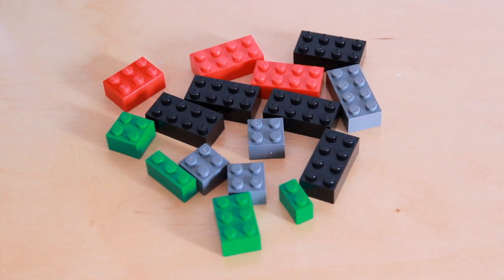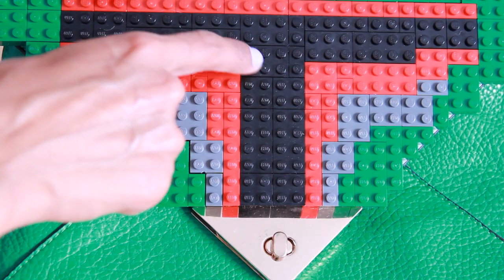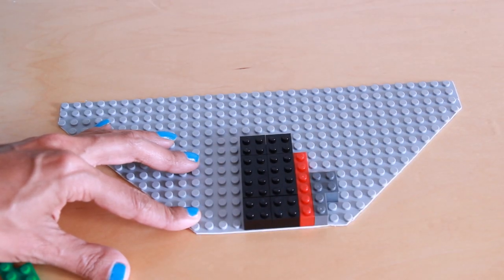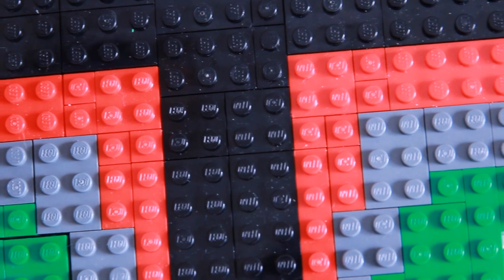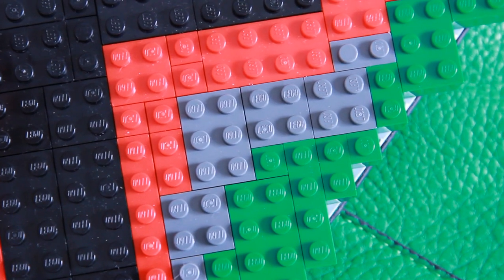Using green, red, black, and gray Legos, create Boba's helmet and visor. Arrange the black Legos in a T-shape, then place a few gray Legos on the outside to create some depth. Add some red Legos for the outer visor and then green for his helmet.